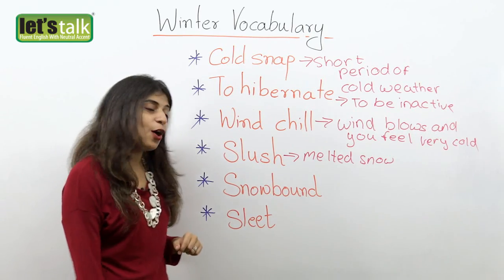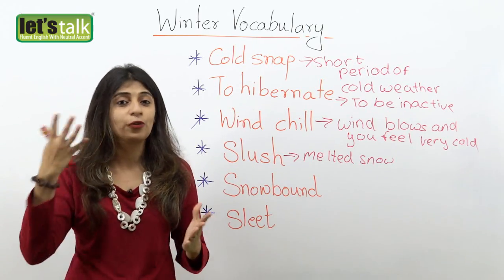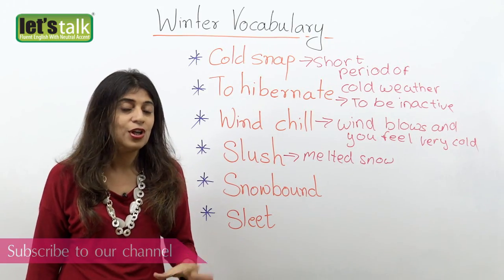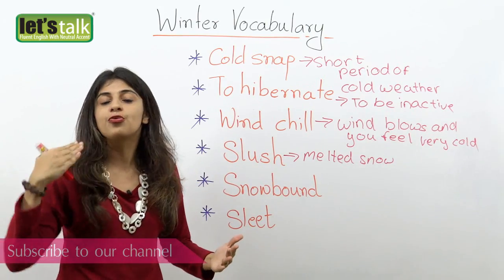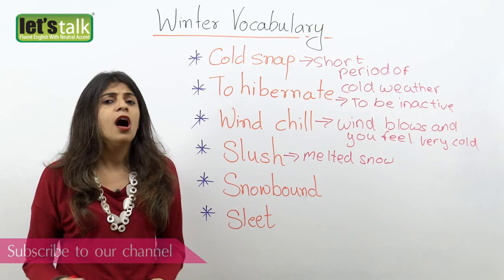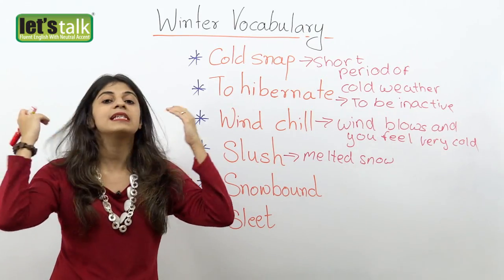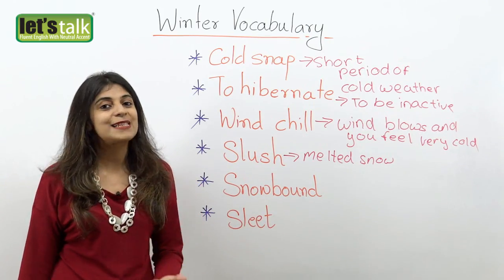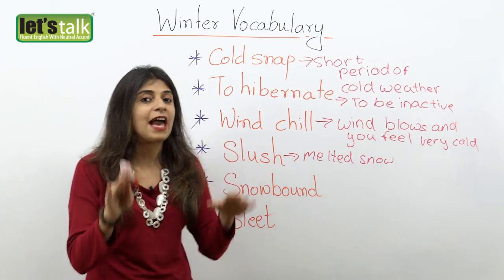The next one is snow bound. When there's heavy snow outside your house and on the roadway, it's impossible for you to travel — which means that you are snow bound. Because of heavy snow, you really cannot step out of the house. For example: all flights were cancelled because of snow bound conditions, meaning there was heavy snow on the road or on the runway and that's why the flights were cancelled. So snow bound is when you cannot travel because of heavy snow.